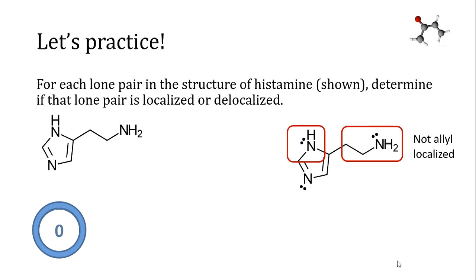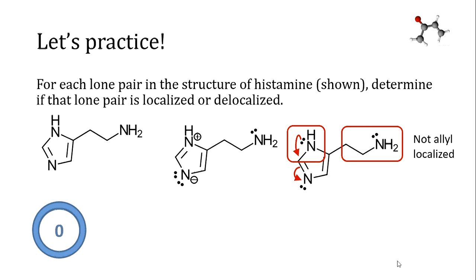Now let's consider the lone pair on the nitrogen at the top of the structure on the left. This lone pair is on an atom that's neighboring to a double bond, and we can draw resonance structures using that lone pair, delocalizing them to other positions around the ring. Here is one of those resonance structures, but there is another one that you might have seen as well. This lone pair is an allyl lone pair and is delocalized.